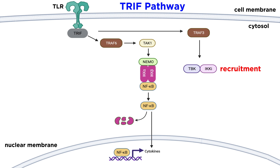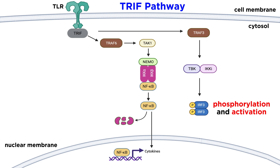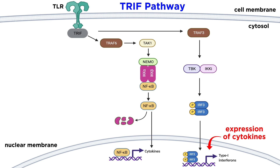TRAF3, on the other hand, recruits TBK1 and IKKI. Together, these phosphorylate and activate IRF3. Activated IRF3 forms a dimer and then moves into the nucleus, where it drives expression of type 1 interferons, which are cytokines that are critical for antiviral responses.